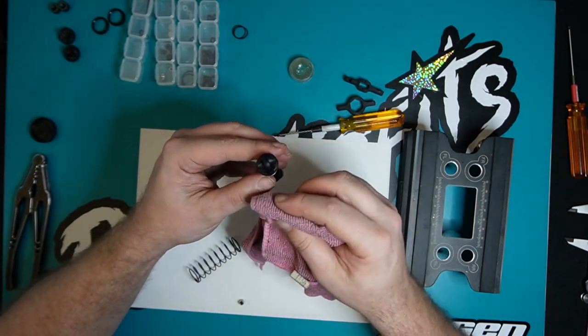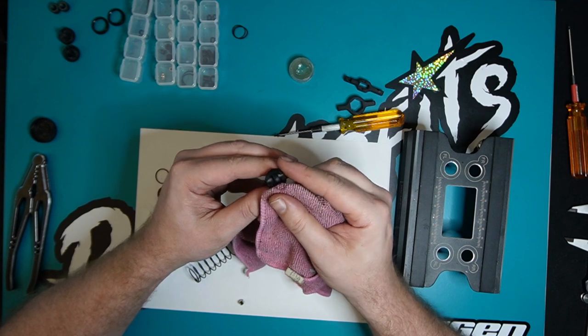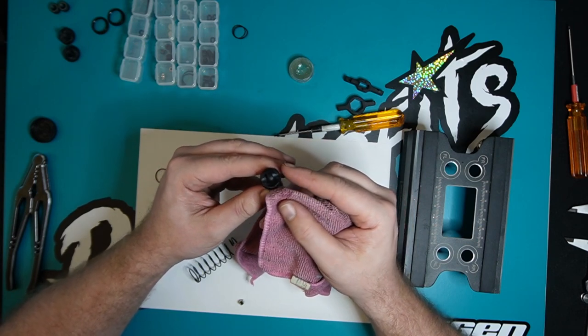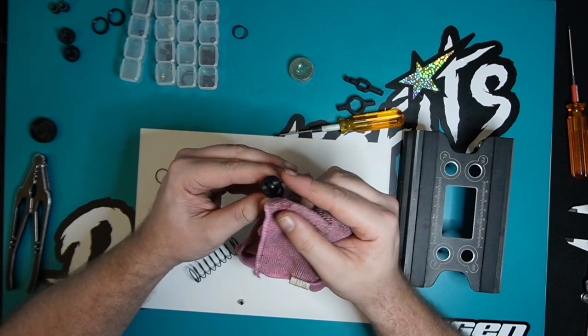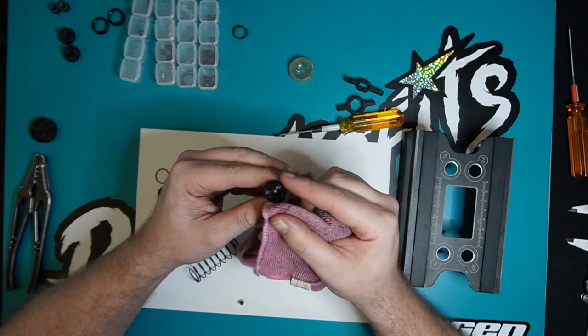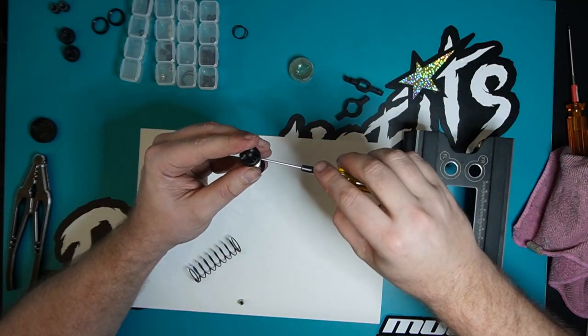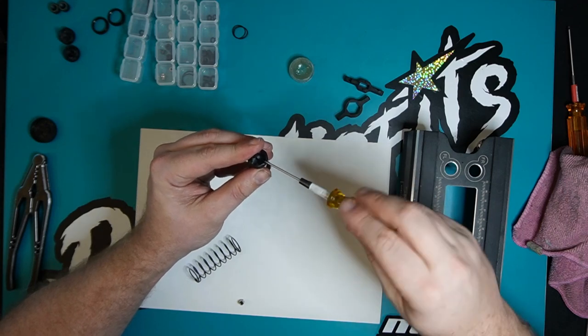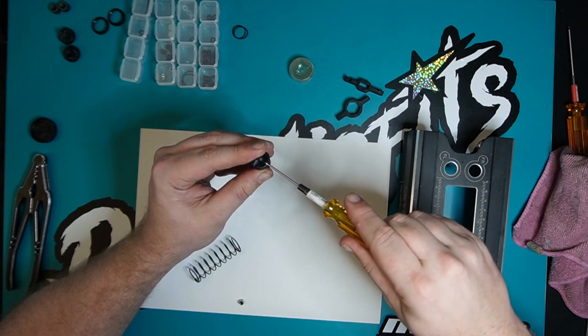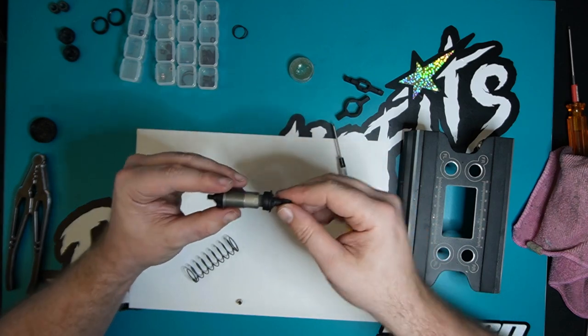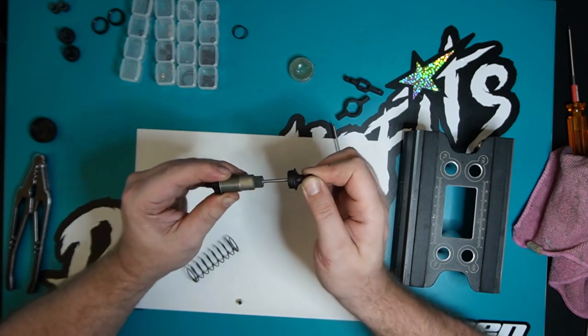So with that on, we're going to slowly - because you know, don't want a jet of oil across the room do we - compress the shock down, getting rid of that excess oil and any air that's in there. And put the bleed screw in. Don't over-tighten it, you just want to seal it.